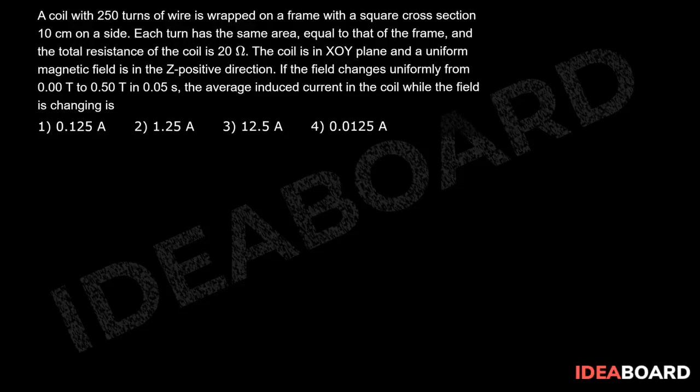A coil with 250 turns of wire is wrapped on a frame with a square cross section 10 cm on a side. Each turn has the same area equal to that of the frame and the total resistance of the coil is 20 ohms.